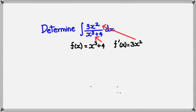From this point what you should notice is 3x squared is in the numerator, x cubed plus 4 is in the denominator. So this is what we were talking about earlier. We write down the formula, and as you can see,